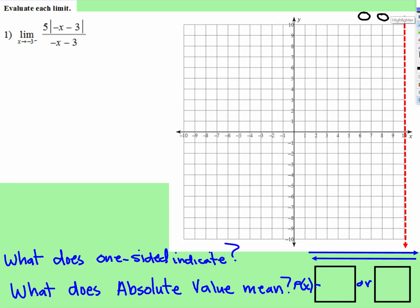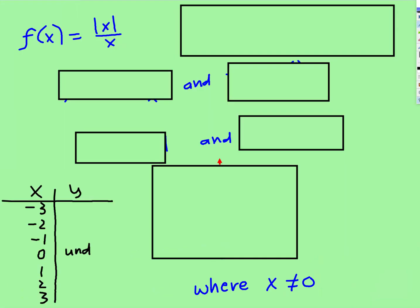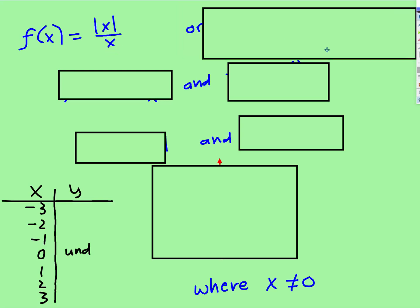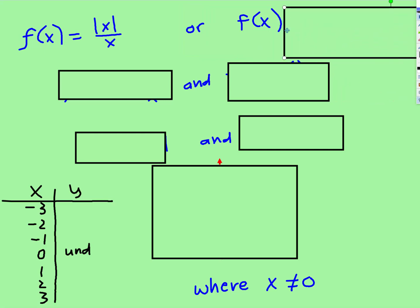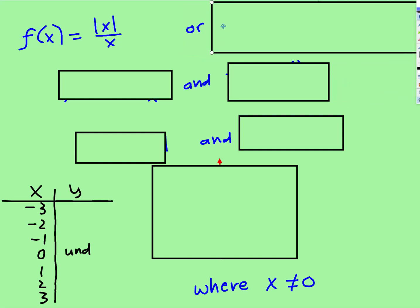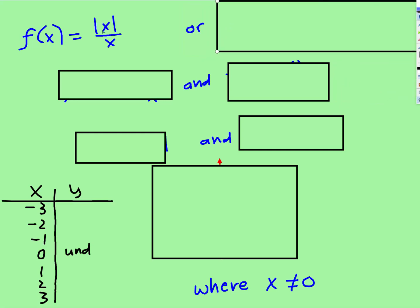Before we do this page, we're going to come over here. So this is what the parent graph would look like: the absolute value of x over x, or you could have x over the absolute value of x. I'm using this one as an example.